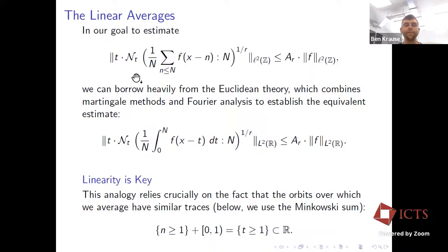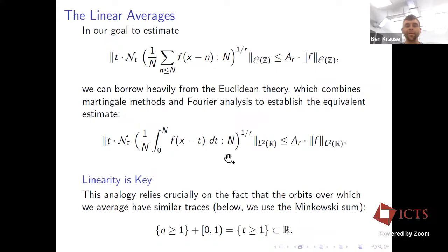For the rest of the talk, until I say otherwise, you can focus on L²(Z) functions — sequences that are square-summable. To prove this jump-counting estimate, if I formally smooth out the sum and replace the discrete variable by a continuous variable, I arrive at a Euclidean problem. Using the fact that the trace of the Z orbit plus a unit interval is equivalent to the trace of T in the positive reals, we can transfer the first estimate to the second and use real variable theory — martingale methods and Fourier analysis.